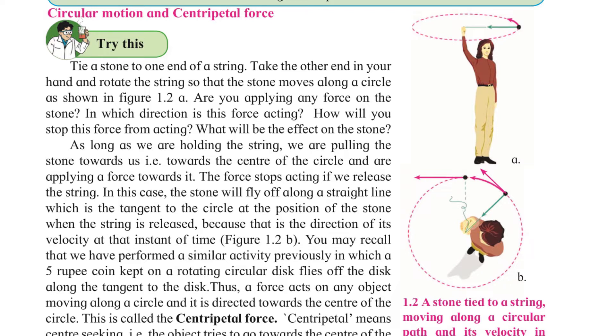As long as we are holding the string, we are pulling the stone towards us—that is, towards the center of the circle—and applying a force towards it. The force stops acting if we release the string. In this case, the stone will fly off along a straight line which is the tangent to the circle at the position of the stone when the string is released, because that is the direction of its velocity at that instant of time.